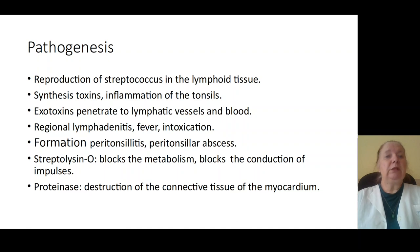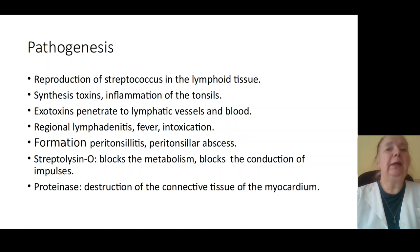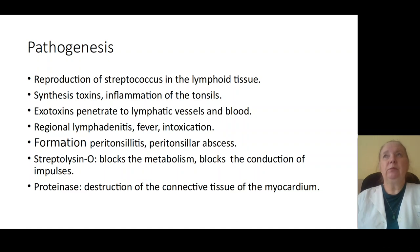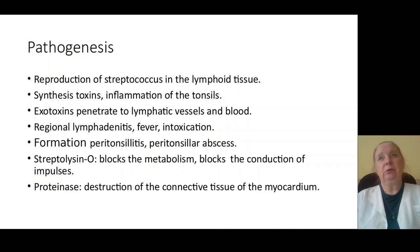Exotoxins penetrate into blood and cause exotoxinemia and endotoxinemia through bacterial destruction. Exotoxinemia and endotoxinemia cause increasing of temperature and syndrome of intoxication. In severe forms of angina, a higher level of toxins in blood causes formation of toxic shock, decreasing of blood pressure, decreasing of diuresis, respiratory insufficiency, and polyorganic insufficiency.